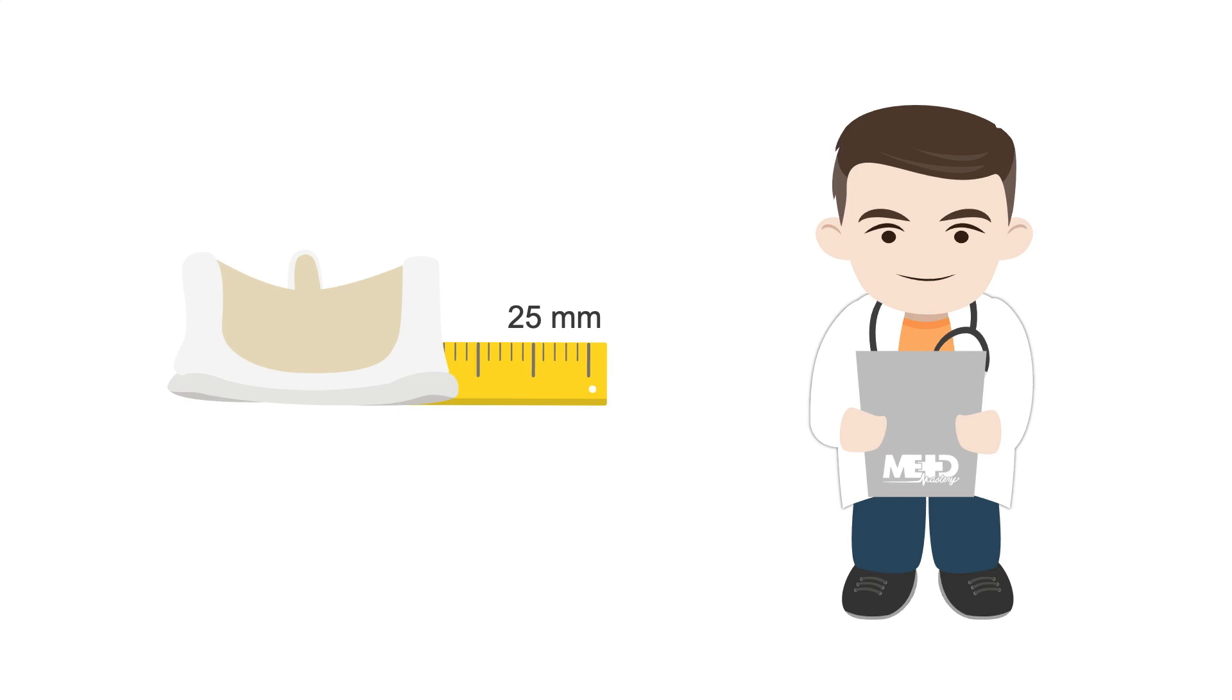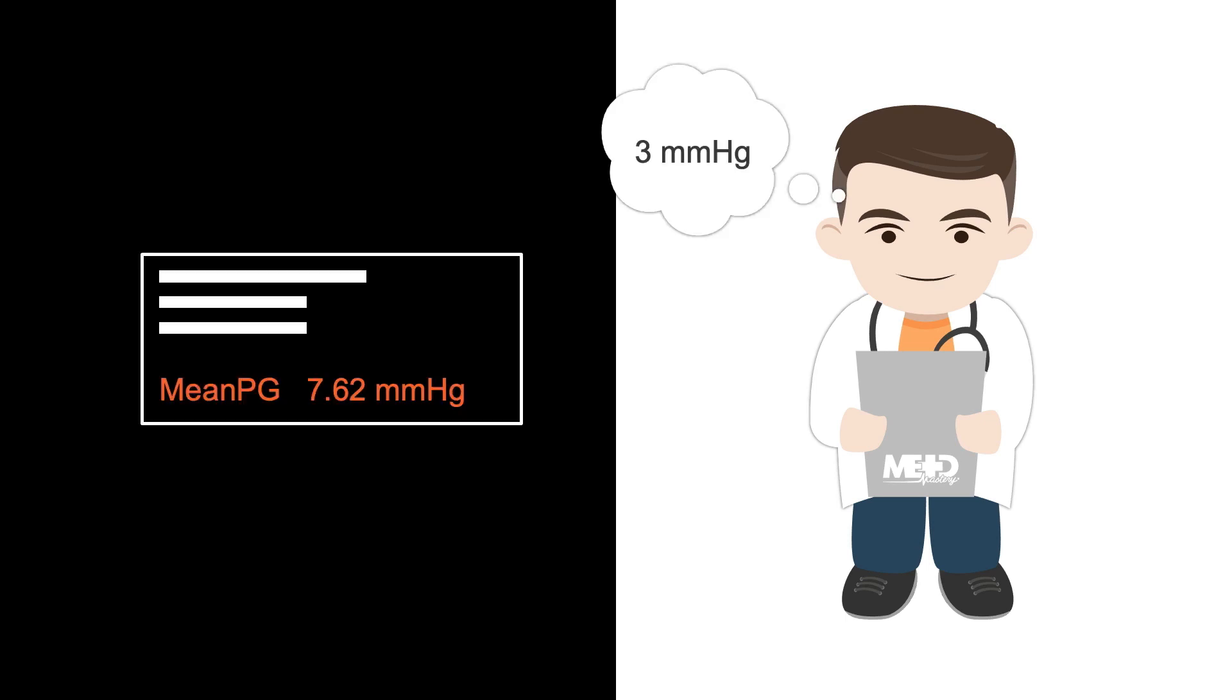This is a 25 mm St. Jude bioprosthesis, and the reference mean gradient for this specific valve is 3 mmHg. Therefore, a mean gradient of 7.62 mmHg suggests increased flow and a degree of obstruction.